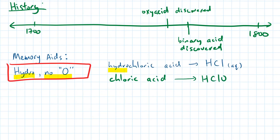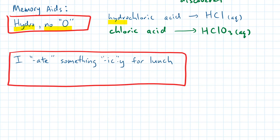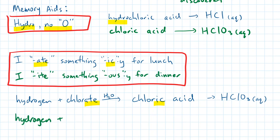Chloric acid, on the other hand, does contain oxygen. Here's another memory aid: I ate something icky for lunch. This is a reminder that if the polyatomic ion ends in ate, then change it to ic acid. And there is a second line to this memory aid, but we'll save that for another day.